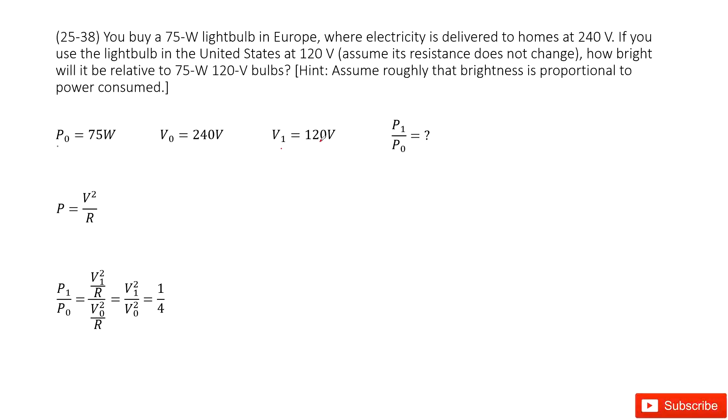So there is a hint. Normally, the answer is in this hint. The hint tells you assume roughly the brightness is proportional to the power consumed. So that means the bright ratio we can consider is just the power ratio.